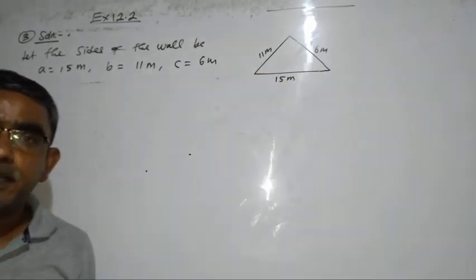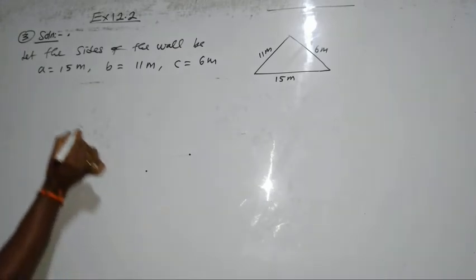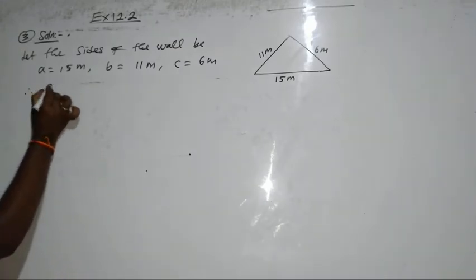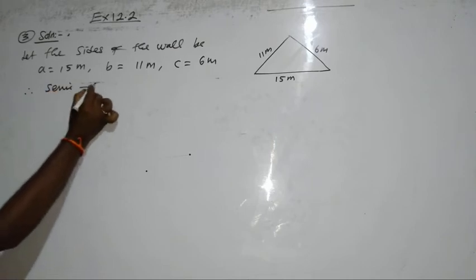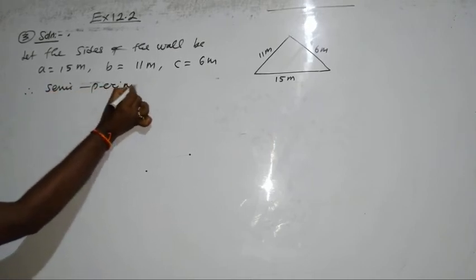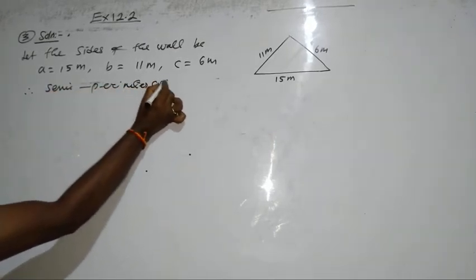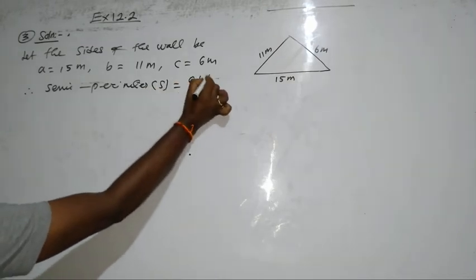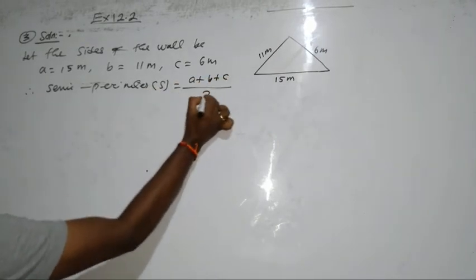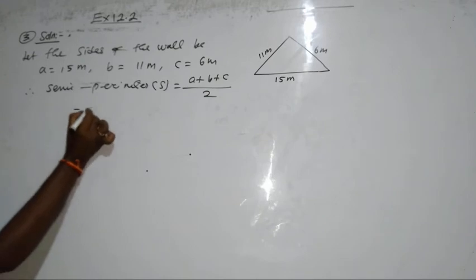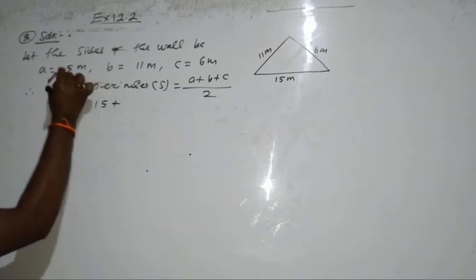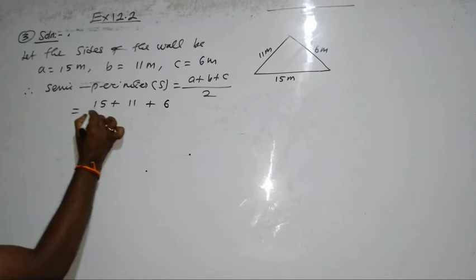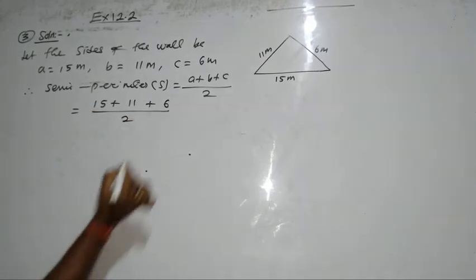So, area of triangle by using Heron's formula. We can find the semi-perimeter. Now for semi-perimeter, we call it S, equal to A plus B plus C, divided by 2. So, A is 15, B is 11, and C is 6, divided by 2 meter.